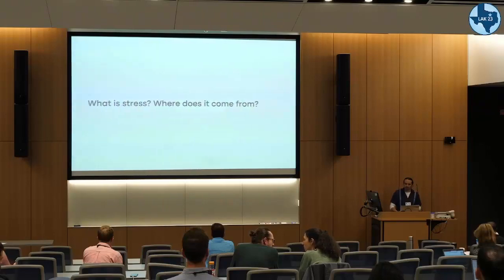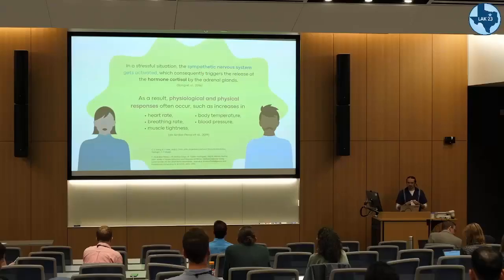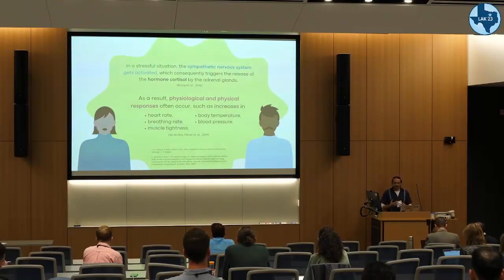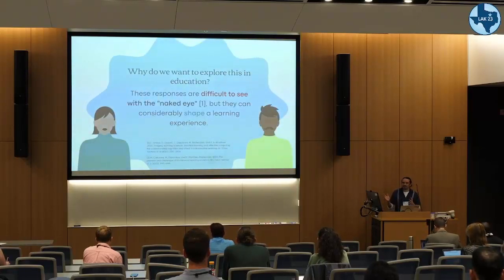Where does stress come from? We know that stress is the result of the sympathetic nervous system reacting to some stimuli, and we can capture information about stress if we use sensors. A reaction of the body to stress is that the heart rate changes, breathing changes, muscle tightness — we've all felt these — as well as body temperature changes and blood pressure.